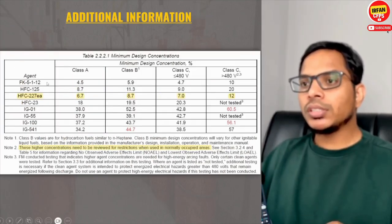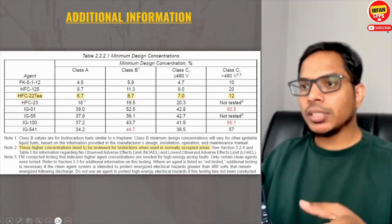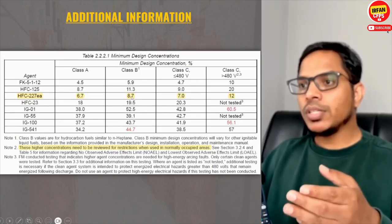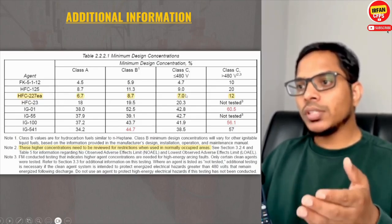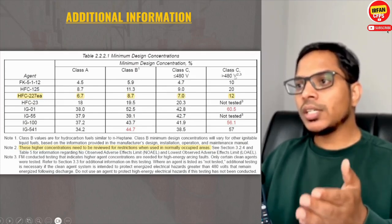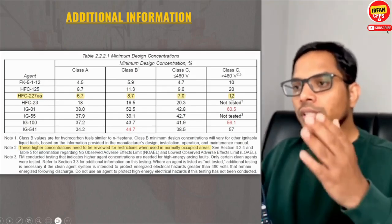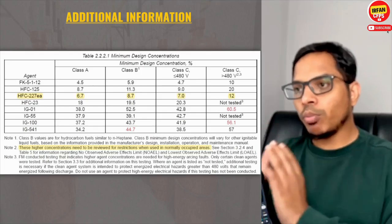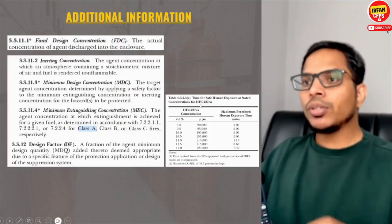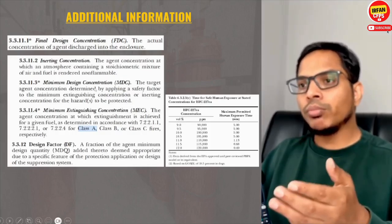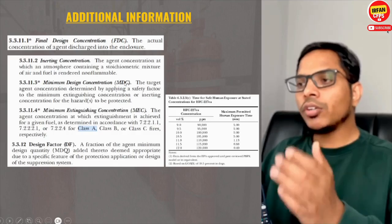As per the FM guide, the minimum design concentrations for FM 200 systems are as follows: class A is 6.7%, class B is 8.7%, class C with voltage less than or equal to 480V is 7%, and class C with voltage greater than 480V is 12%. We need to check our project specifications to define the correct minimum design concentration, noting that NFPA 2001 also defines minimum design concentration, minimum extinguishing concentration, and final design concentration.